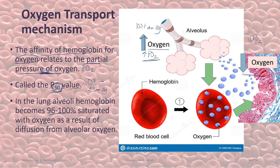The basic idea of the transport mechanism is that the partial pressure of oxygen determines the affinity of hemoglobin. The higher the partial pressure, the more affinity hemoglobin has with oxygen, while in areas of decreased partial pressure — for example, in the tissues or skeletal muscles — the oxygen is released because of the decreased affinity of hemoglobin to oxygen.